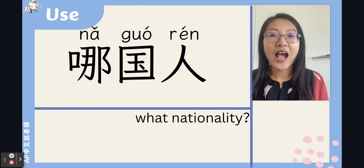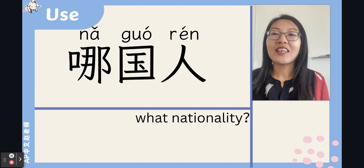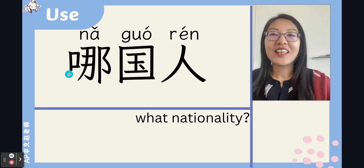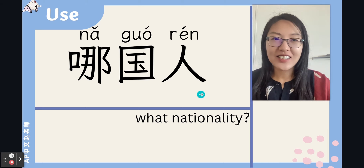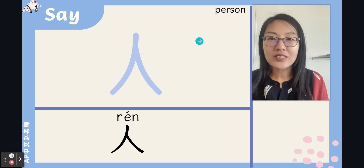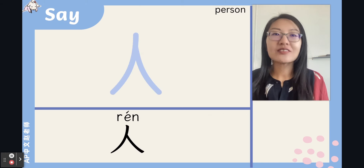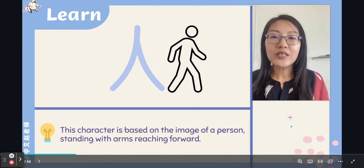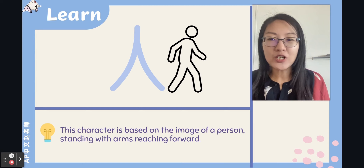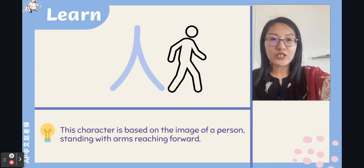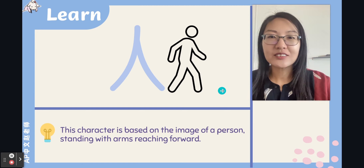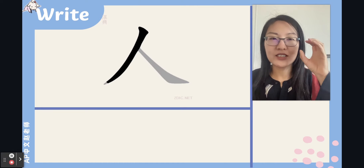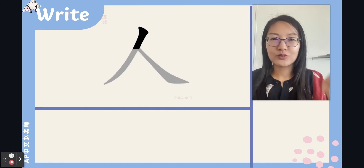哪国人 — which country person? The third character is 人 (rén), meaning 'person' — this character is super easy. It's based on the image of a person standing with an arm reaching forward. Let's write this character — it's a symbol component, just two strokes.